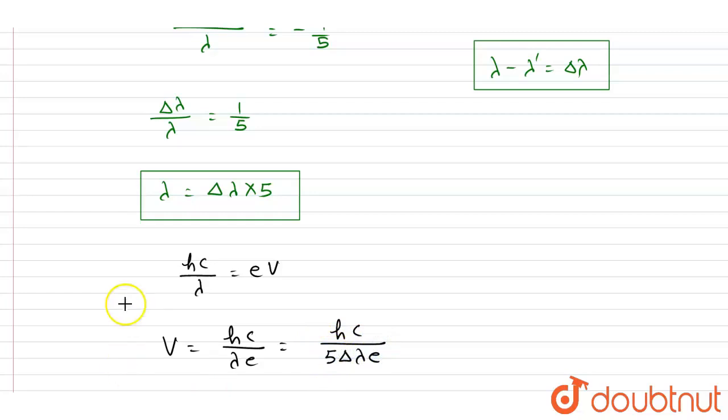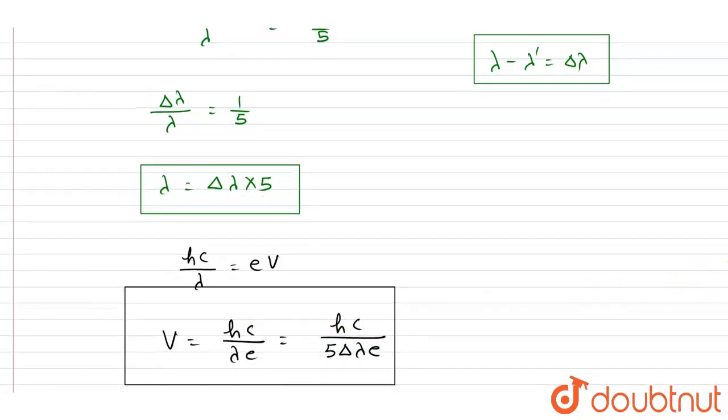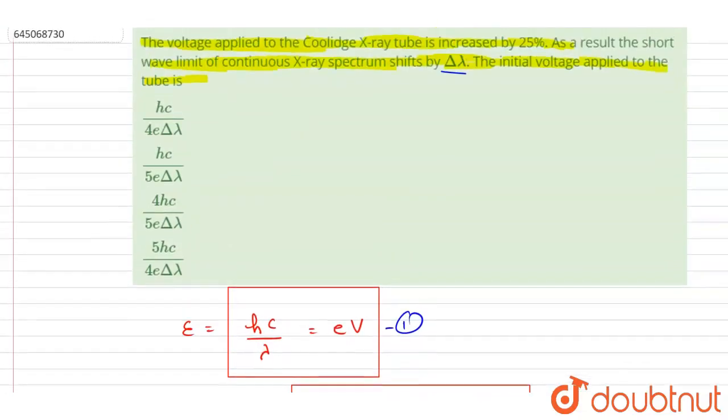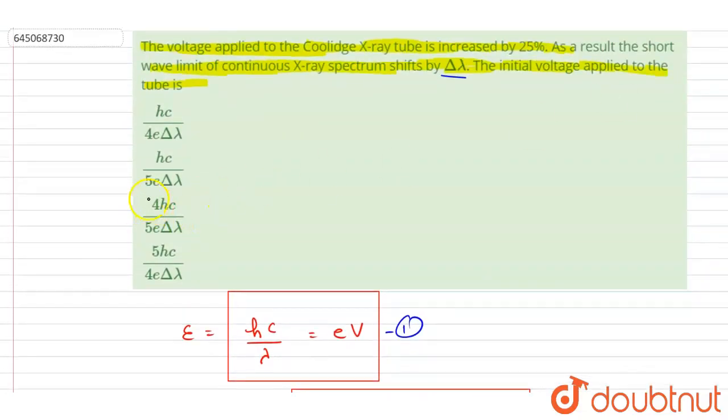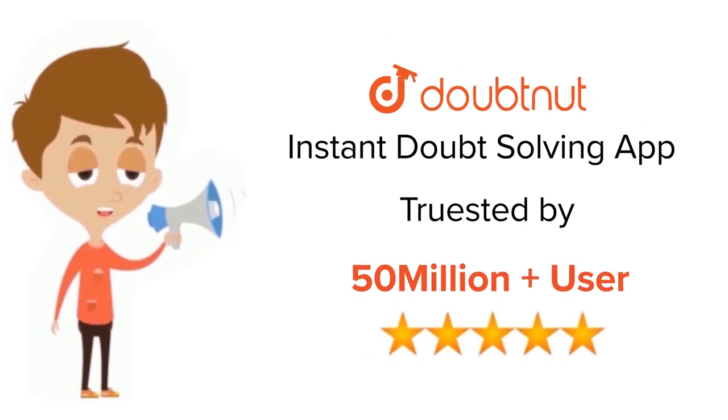This will be the applied voltage and answer of this question. Now you can check for the option: hc by 5 delta lambda e. So B is the correct answer.